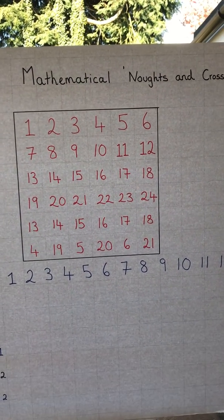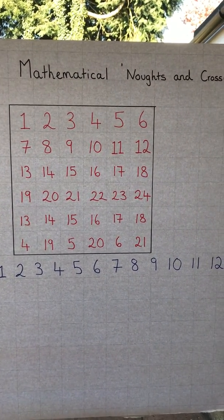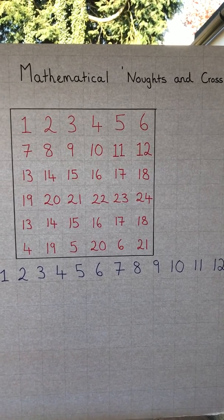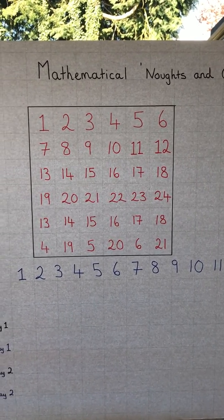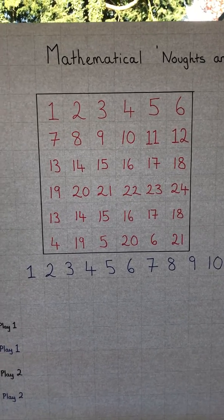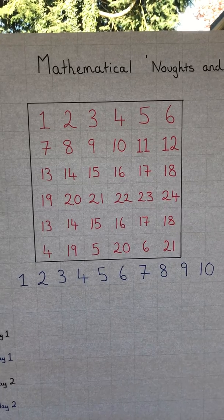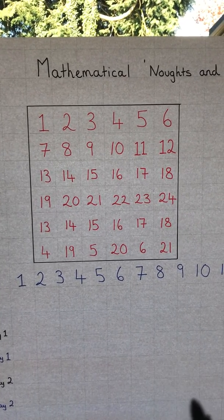You can play this very simply in pairs, or you can play in a team of four with two teams of two. In essence, you need to create yourself a wonderful little grid like this - it's six squares across, six squares down, and you need to put these numbers in red.